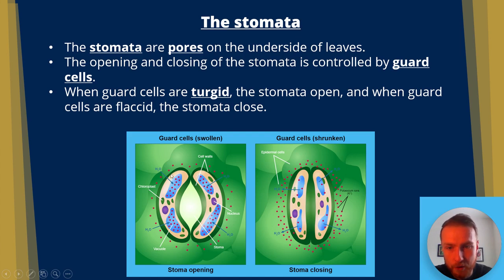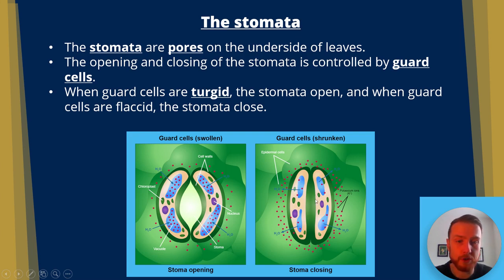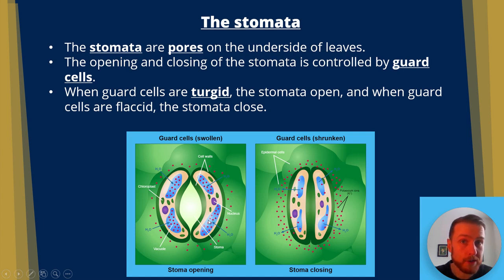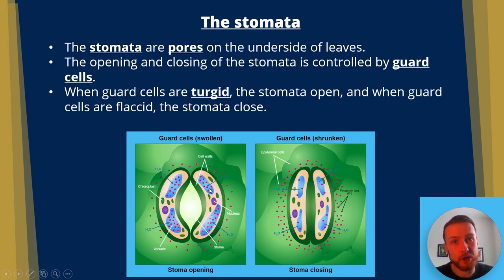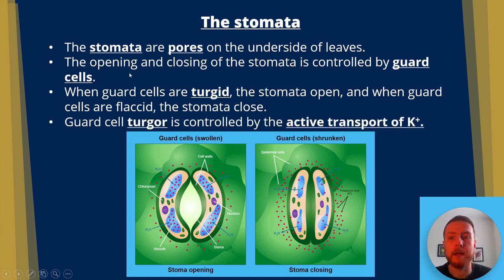When the guard cells are swollen or turgid, the stoma are open. When water leaves the guard cells because there are more potassium ions outside, the stomata will close. Plants can actively transport potassium into the guard cells, which will lower the water potential, meaning water follows into the guard cells from surrounding cells, making the guard cells turgid and opening up the stomata. So guard cell turgidity is controlled by the active transport of potassium ions.